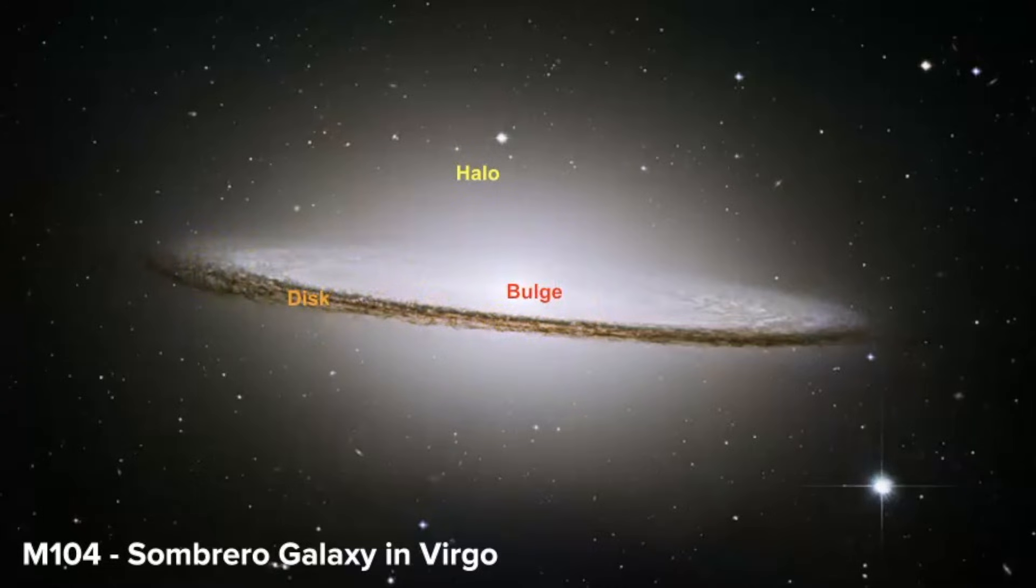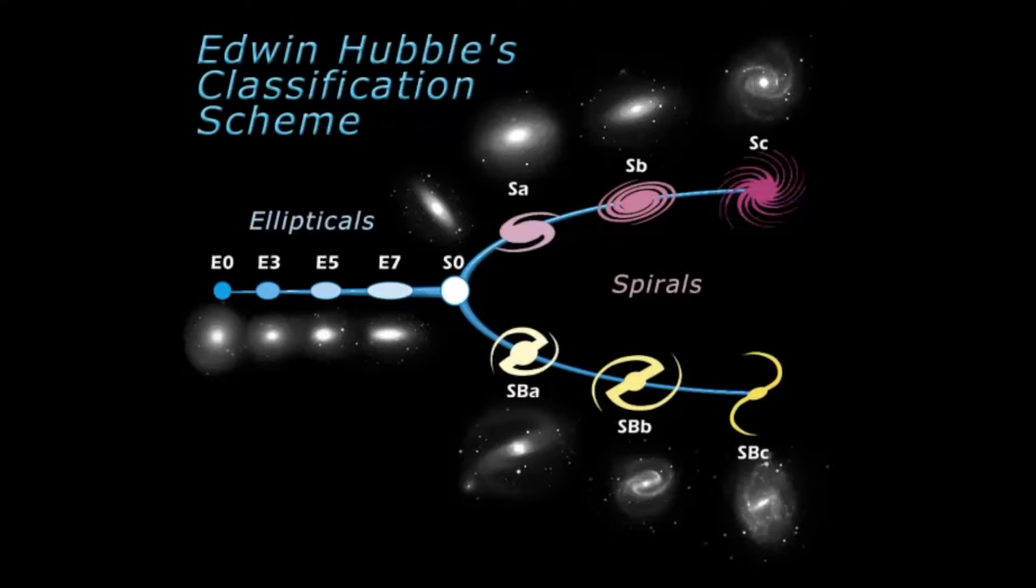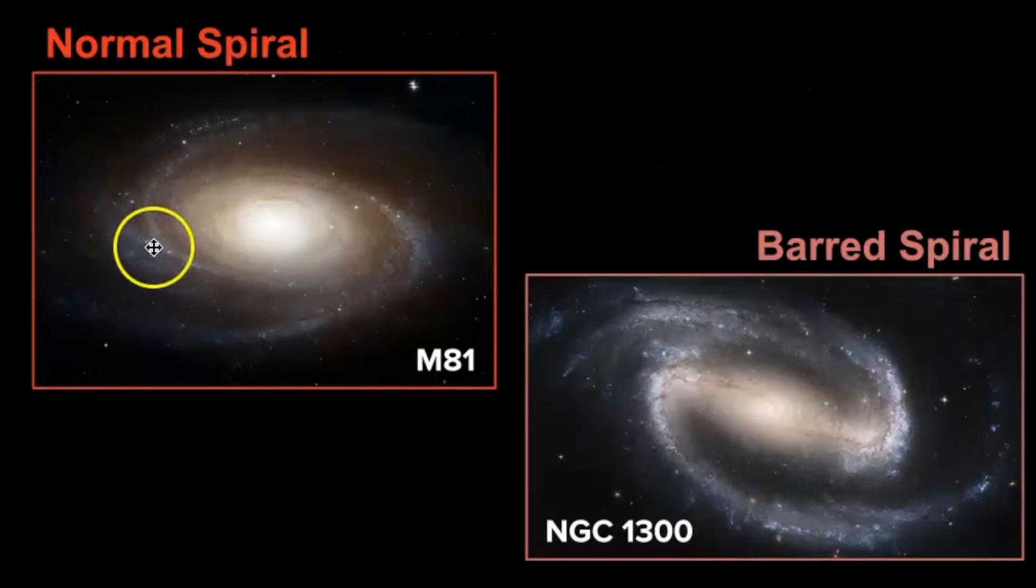This is a cool galaxy because we're looking at it edge on. Remember we classify spiral galaxies based upon their shape. Those two shapes include being a normal spiral or a barred spiral. A barred spiral has that bar structure throughout the center and then the arms go around the center, where we don't see the barred structure in normal spiral galaxies.